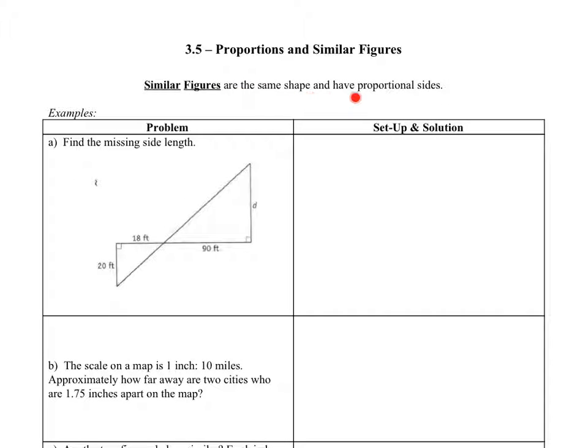Similar figures are the same shape and have proportional sides. So in order for shapes to be similar, or figures to be similar, they need to be the exact same shape.